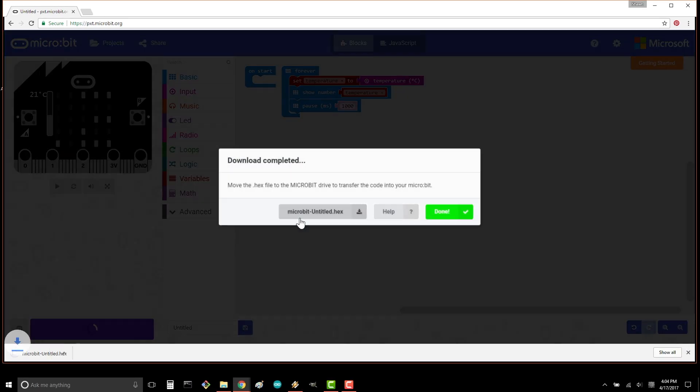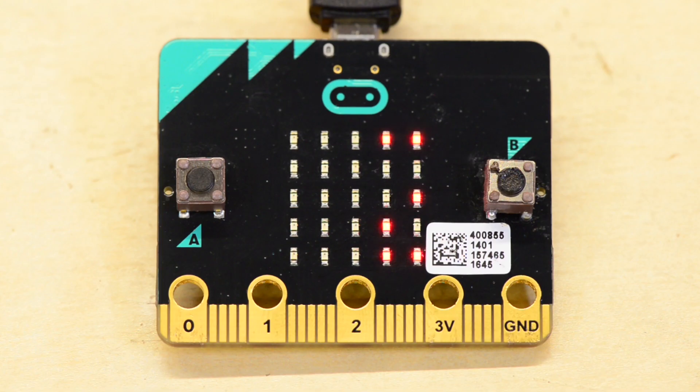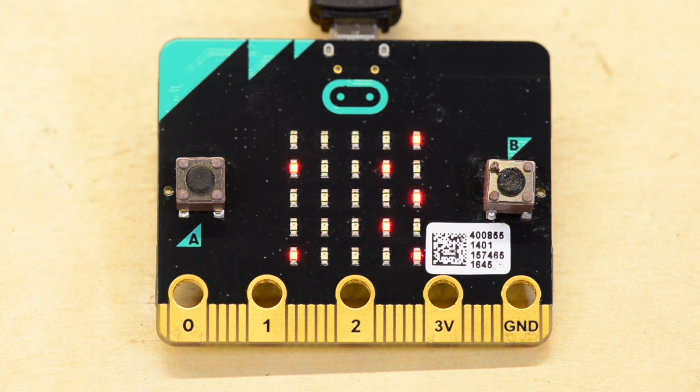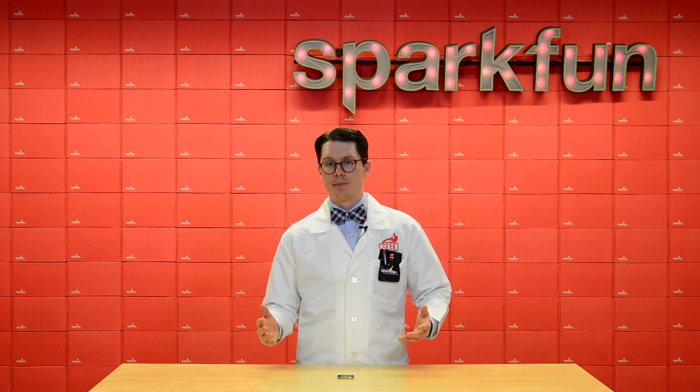Download the project and copy it to your micro bit. Every second, the current temperature of the processor will scroll across the display. Note that this is given in Celsius, so you might have to do some math to get it to Fahrenheit.